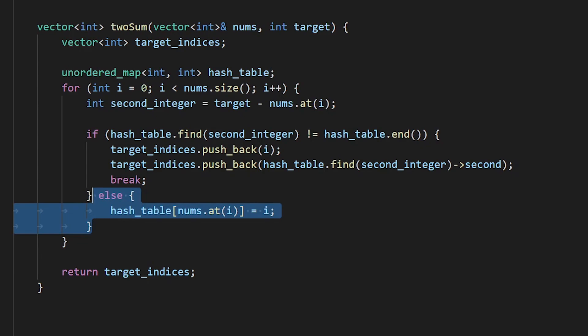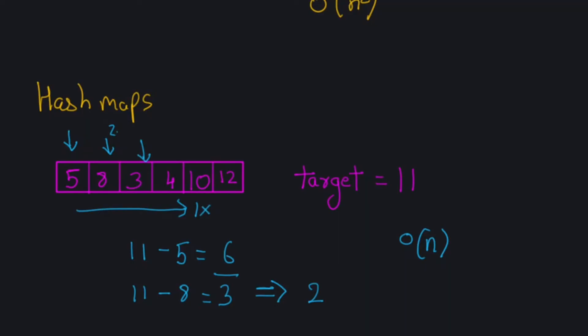Here we just do a simple insert into the hash map. You might wonder if hash map operations have their own runtime cost — they do, but hash map lookups and insertions run in constant time O(1), so it's negligible. When your overall runtime is O(n), you ignore that constant factor, and your final runtime is O(n).